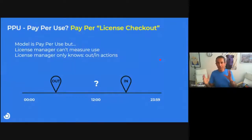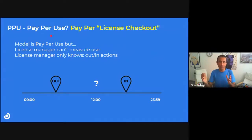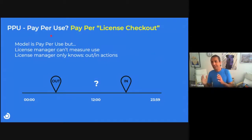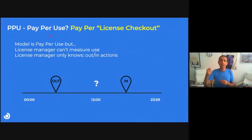Let's take a look at the model first before we dive in. Autodesk TokenFlex is actually a pay-per-use licensing, but actually it's a per-license-checkout. The model is pay-per-use, but the license manager can't really measure use — what it measures is the in-out action.